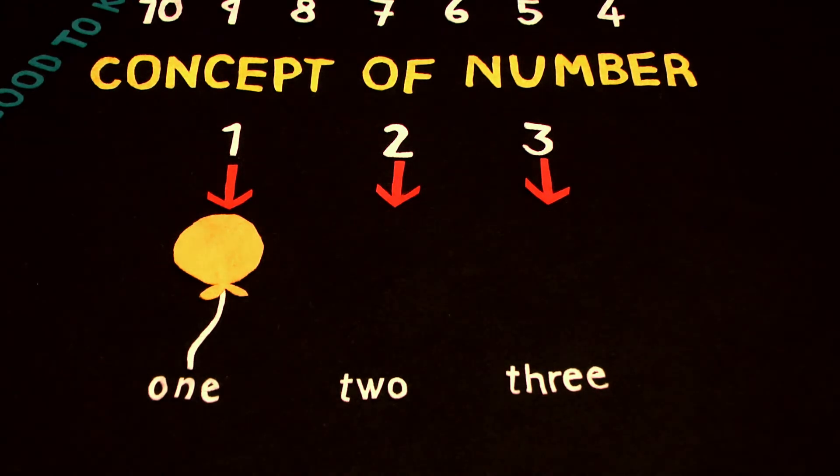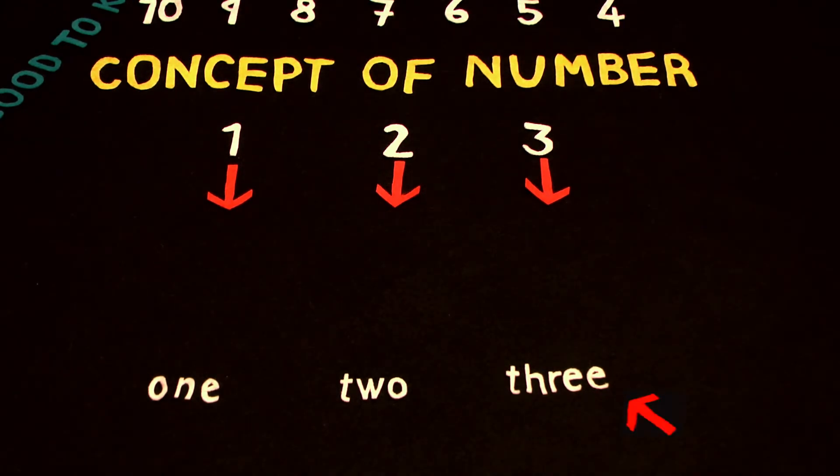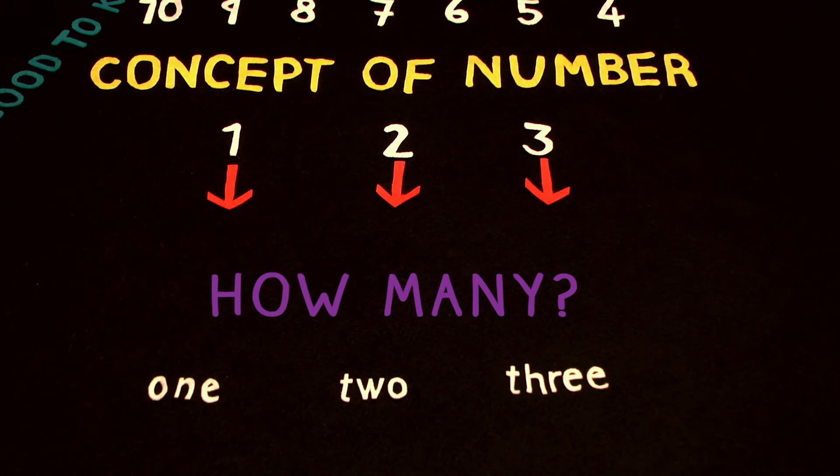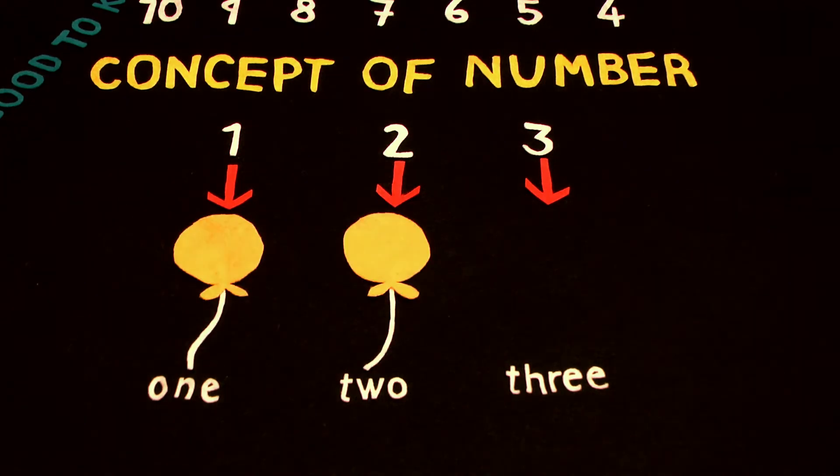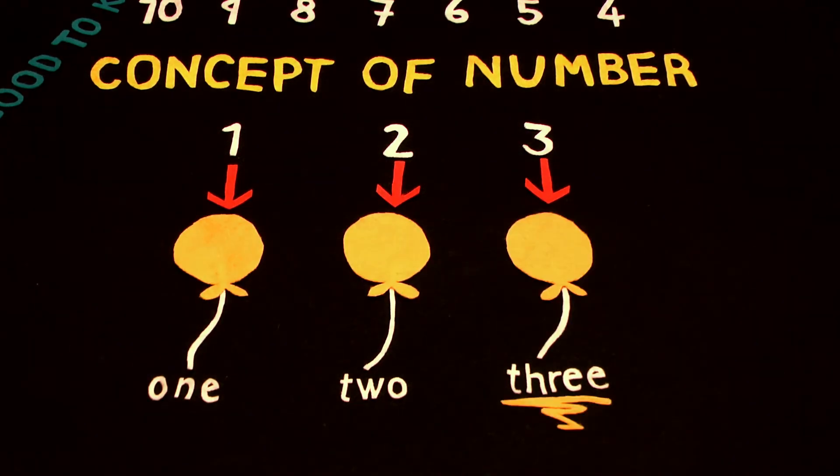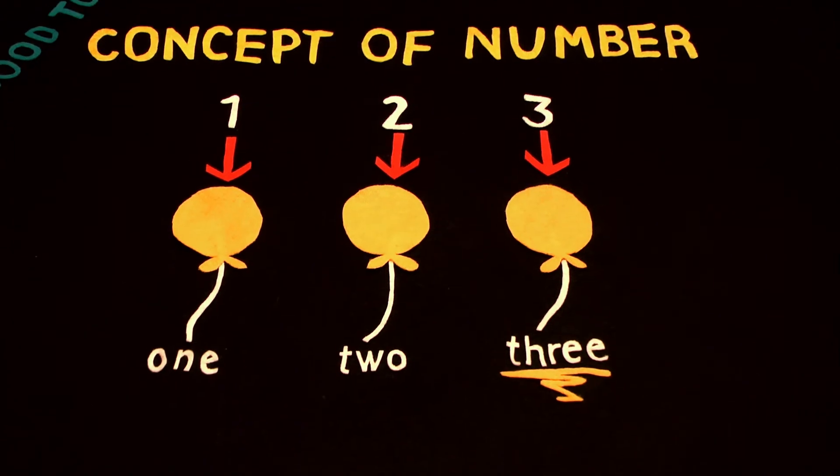Help your child to understand that the last word they say in counting tells how many. One, two, three, three balloons. By the end of pre-K,